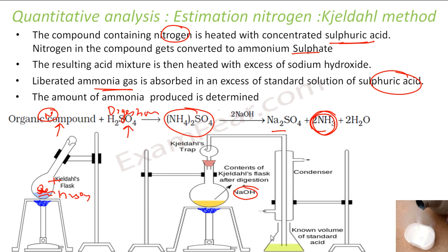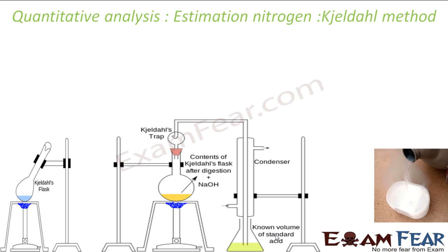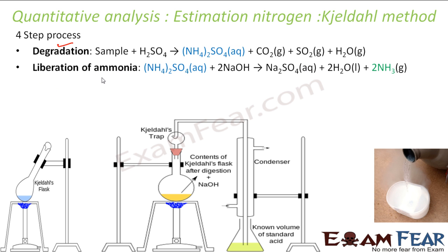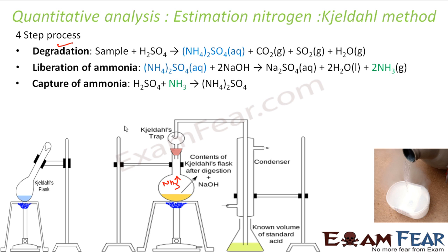You can then determine the volume of ammonia by titration. The same process viewed differently has four steps: the first is called degradation or digestion, where you take the sample, mix it with concentrated sulfuric acid, and get ammonium sulfate. The next step is to liberate ammonia by reacting with sodium hydroxide.